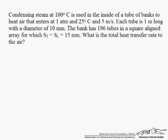This is a tube bank problem where we have condensing steam at 100 degrees C, which is used on the inside of a tube bank to heat air that enters at 1 atmosphere, 25 degrees C, with a velocity of 5 meters per second. Tubes are 1 meter long, the diameter is 10 millimeters. There are 196 tubes in a square aligned array. S_T, which is the pitch, equals S_L, which is 15 millimeters. We want the total heat transfer rate to the air.